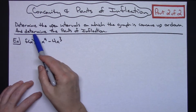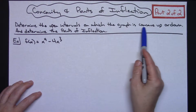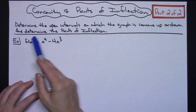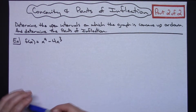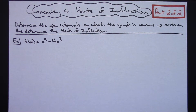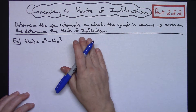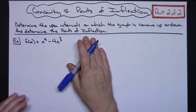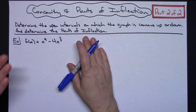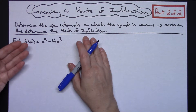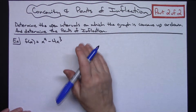The directions say: determine the open intervals on which the graph is concave up or down, and determine the points of inflection. The first thing we need to do is calculate the first derivative and then the second derivative, since our points of inflection come from setting the second derivative equal to zero.